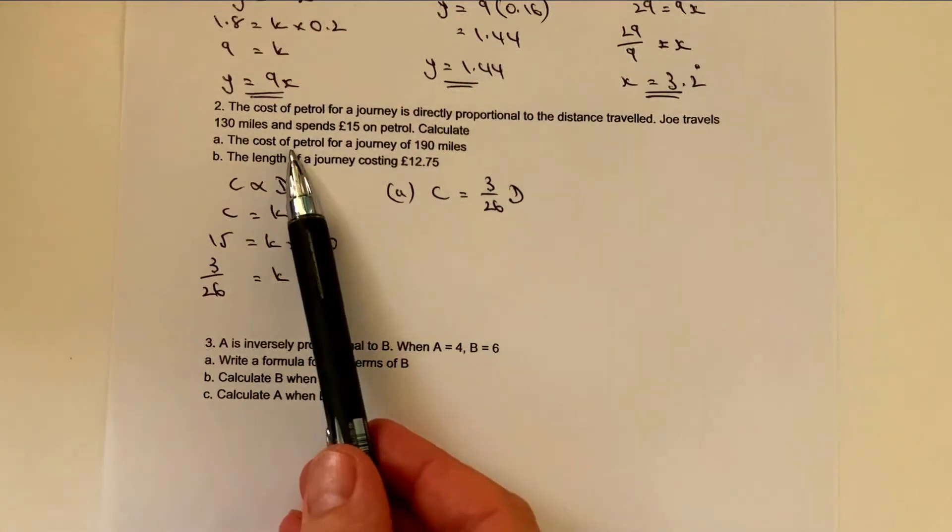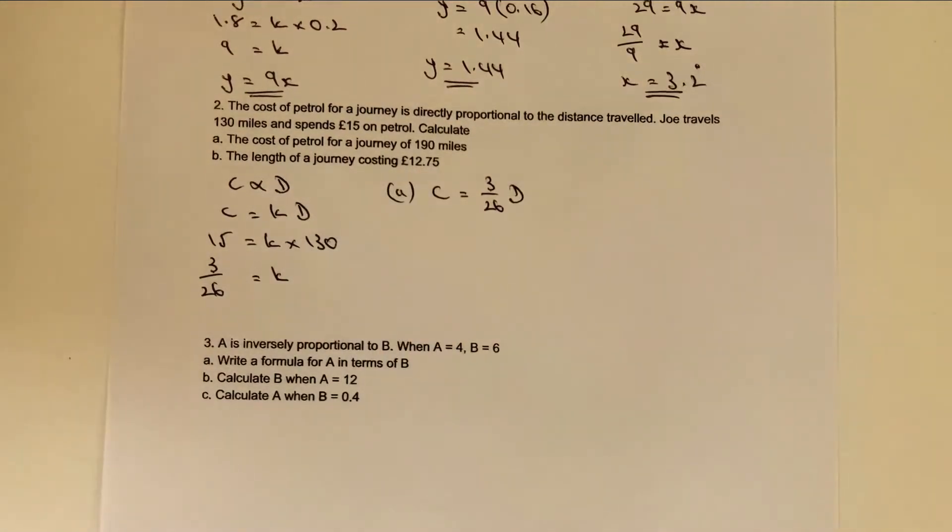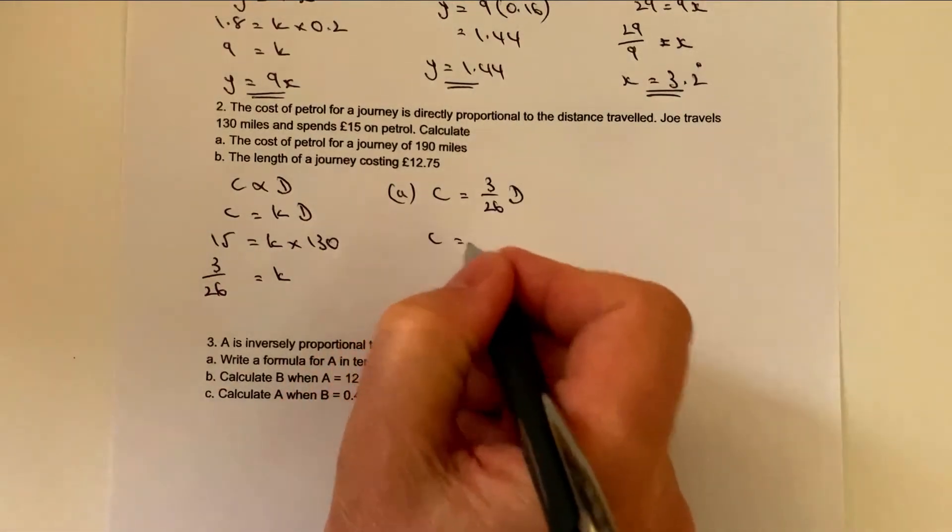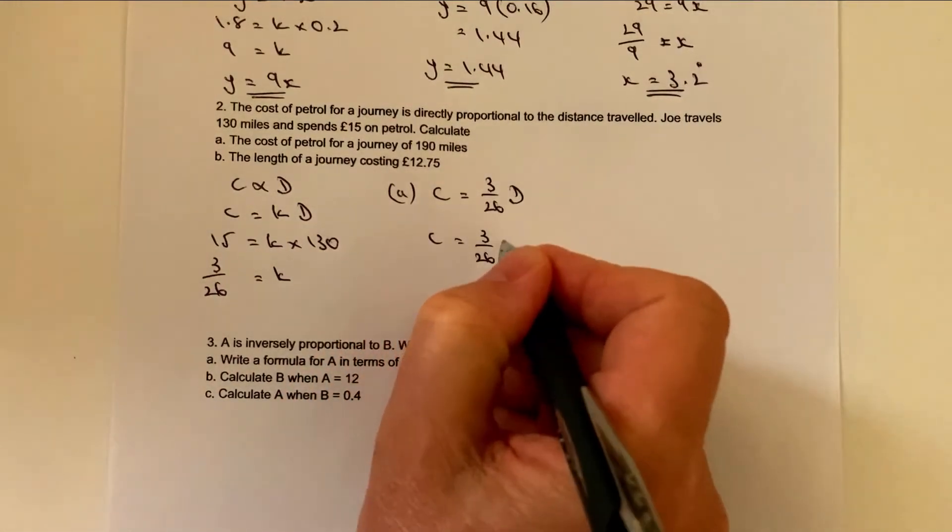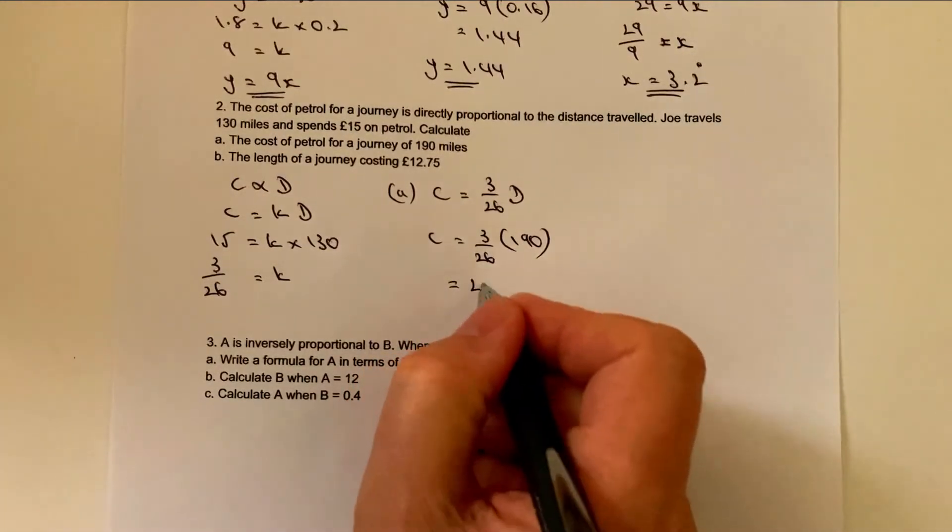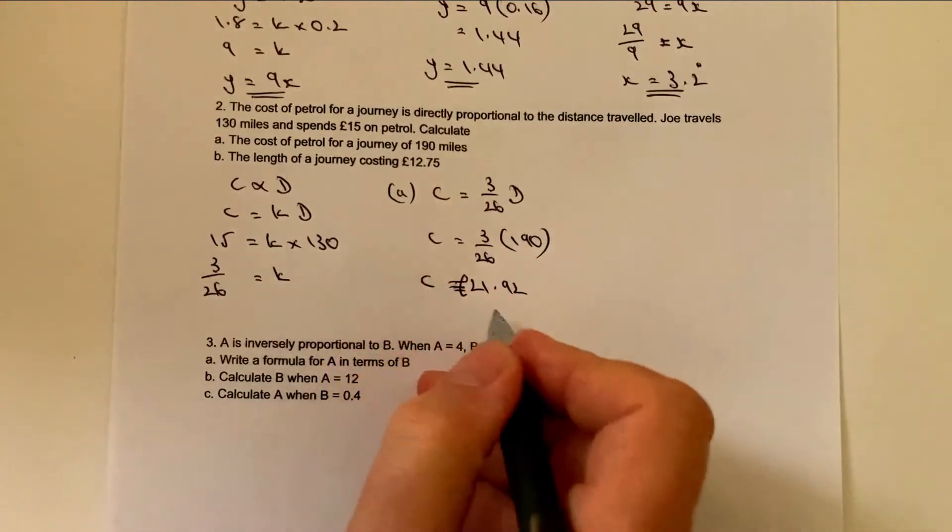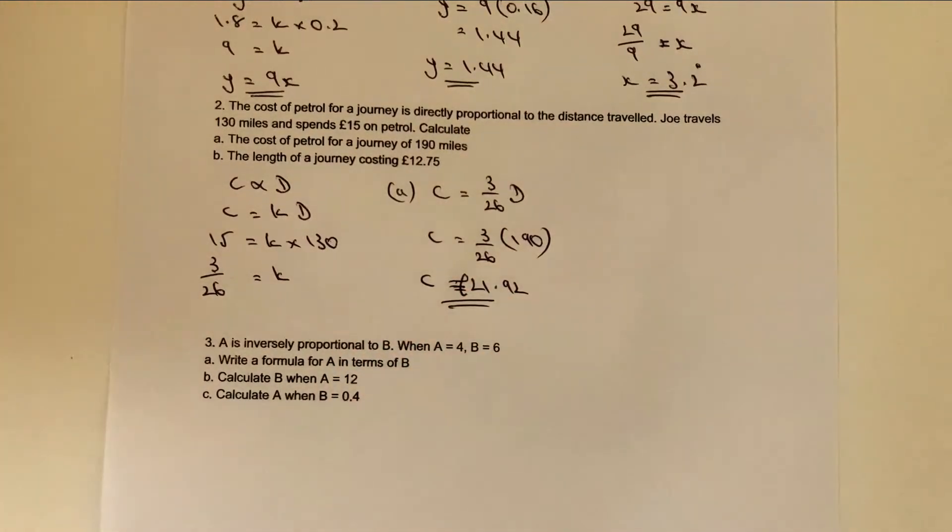And really, if we want to work out the cost of fuel or petrol for a journey of 190 miles, we just replace the d with 190. And we get c equals 3 over 26 multiplied by 190. Pop that in your calculator and you're going to get £21.92, which is £21.92 for the cost of that particular journey.